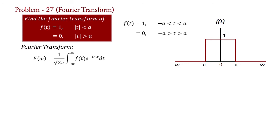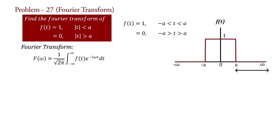Our function is divided into 3 parts: (1) interval −∞ to −a where f(t) = 0; (2) interval −a to a where f(t) = 1; and (3) interval a to +∞ where f(t) = 0.